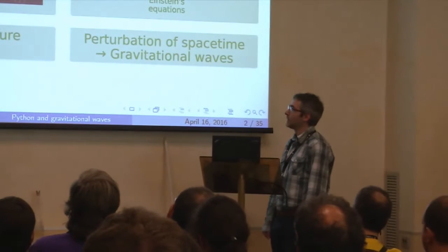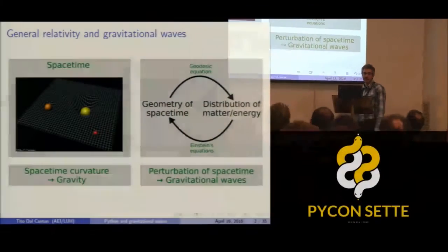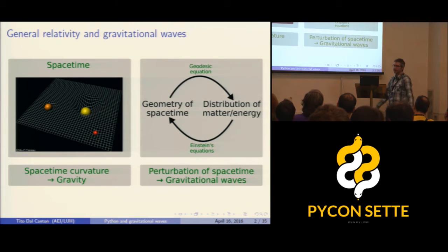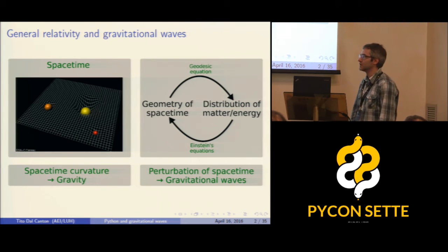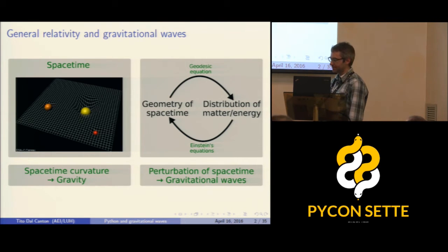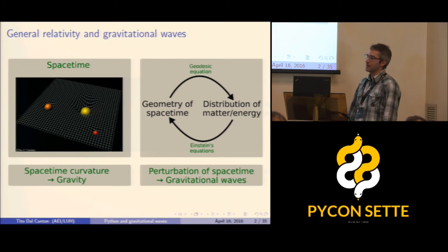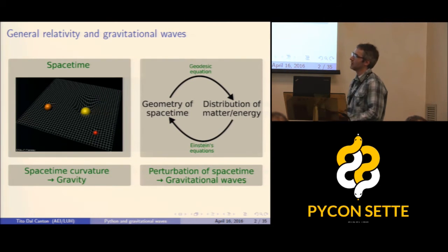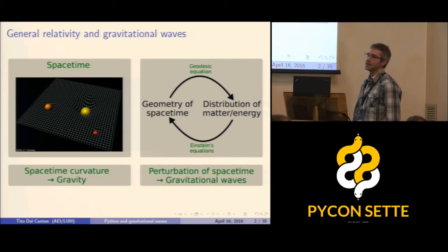Gravitational waves are a physical phenomenon predicted by Einstein's relativity, which is the best theory we have nowadays to explain gravity and physical phenomena on a macroscopic scale — from the scale of this room to astrophysics and cosmology.